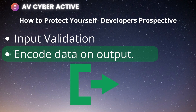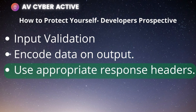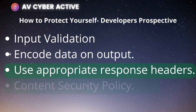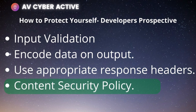Third, use appropriate response headers: to prevent XSS in HTTP responses not intended to contain HTML or JavaScript, use content-type options in headers to ensure browsers interpret responses in the way you intended. Fourth, implement content security policies (CSP): as a last line of defense, use a CSP to reduce the severity of any cross-site scripting vulnerabilities that may still occur.